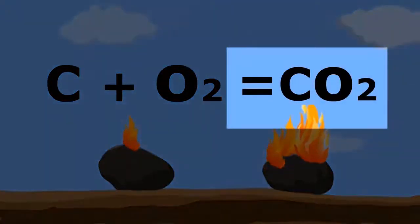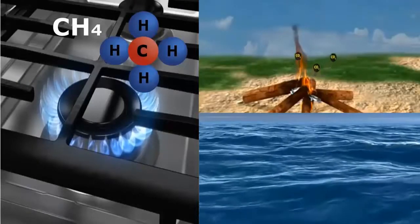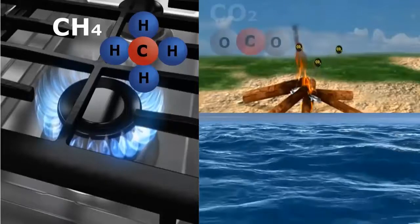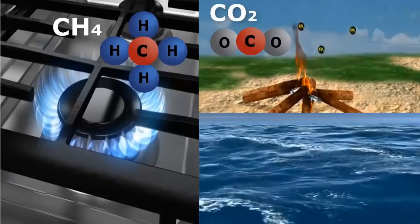Substances resulting from chemical reactions are called products. Methane, during burning in the air, makes carbon dioxide and water.